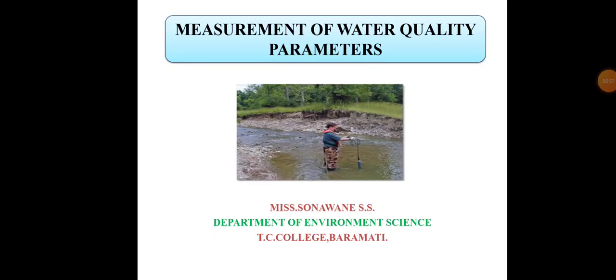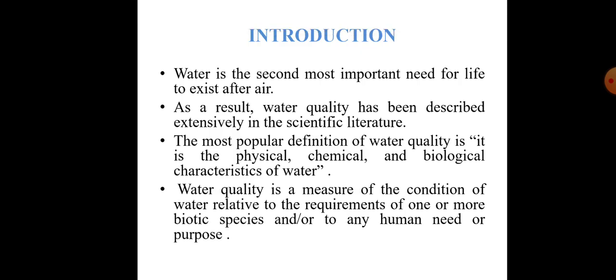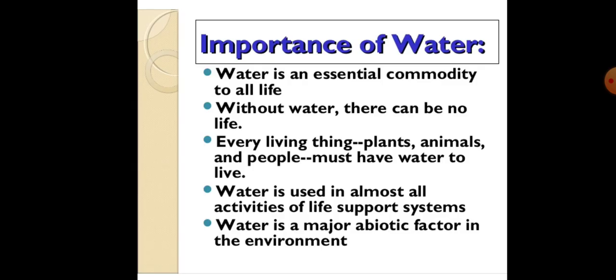Hello students, this is our paper second ABS 2302, unit third: water pollution. In the first lecture we will be discussing the types, what is water pollution, their sources, then impact on humans, plants and animals. Then measurement of water quality parameters, and their introduction and classification of water.